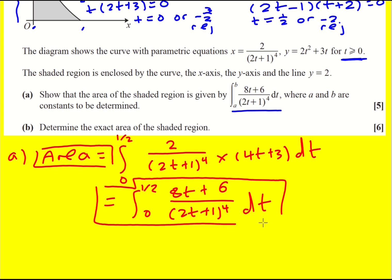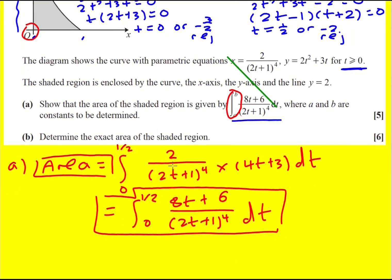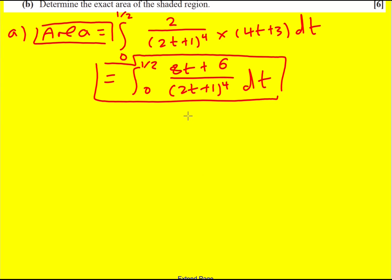The harsh thing about this is that even if you don't see all of that, you could still do part (b) — except you wouldn't have the limits. If you can't see to integrate along the y-axis, you might at least recognise you need to find t when y = 2 and when y = 0. Personally, I think it's quite harsh. Now it says to determine the exact area, so we just need to do the integral. I'm going to do it two different ways.